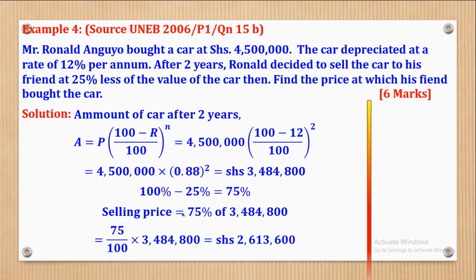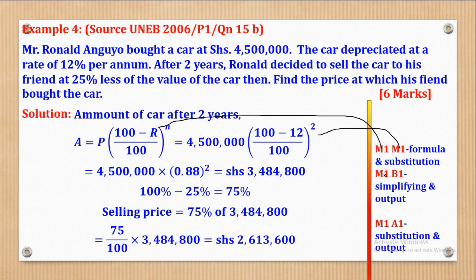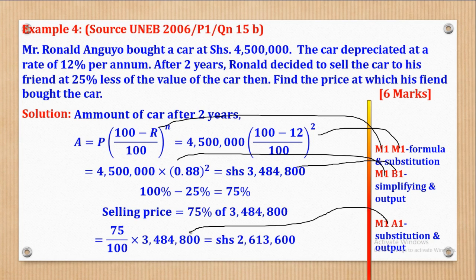That's what they wanted. For marking: M1 for quoting the formula, M1 for substituting, M1 for simplifying, B1 for that output, M1 for the percentage substitution, and B1 for the final output.